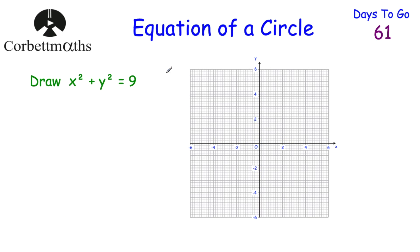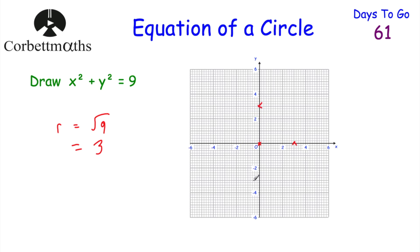Next question: we're given x squared plus y squared equals 9, and we've been asked to draw it. The radius is the square root of 9, which is 3. So we draw a circle with centre at the origin and radius 3. It passes through (3, 0), (0, 3), (−3, 0), and (0, −3). Using a compass, we draw a nice circle through those four points.